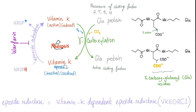Let's get more sophisticated. Vitamin K epoxide is the inactive, oxidized form. The active form is the reduced vitamin K. The conversion from inactive to active requires epoxide reductase, which also converts NADPH to NADP+. During gamma carboxylation, oxygen oxidizes vitamin K back to the epoxide, and CO2 is added as a carboxyl group to activate coagulation factors 2, 7, 9, and 10. Warfarin inhibits this enzyme, also known as VKORC1.